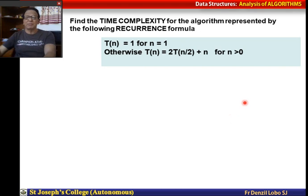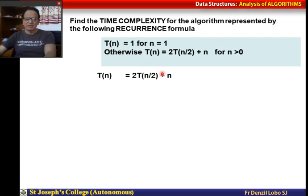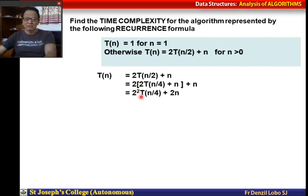Find the time complexity for the algorithm represented by the recurrence: T(n) = 1 if n = 1, otherwise T(n) = 2T(n/2) + n for all n greater than 0. We take T(n) = 2T(n/2) + n and substitute T(n/2), which becomes 2T(n/4) + n/2, giving 2² T(n/4) + 2n.